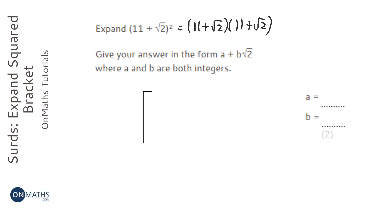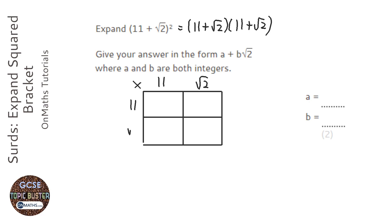So use the method you would with quadratics. I'm just going to use the grid method because it's a bit more visual. But if you want to use foil or anything else that's fine. So 11 plus root 2 times 11 plus root 2.